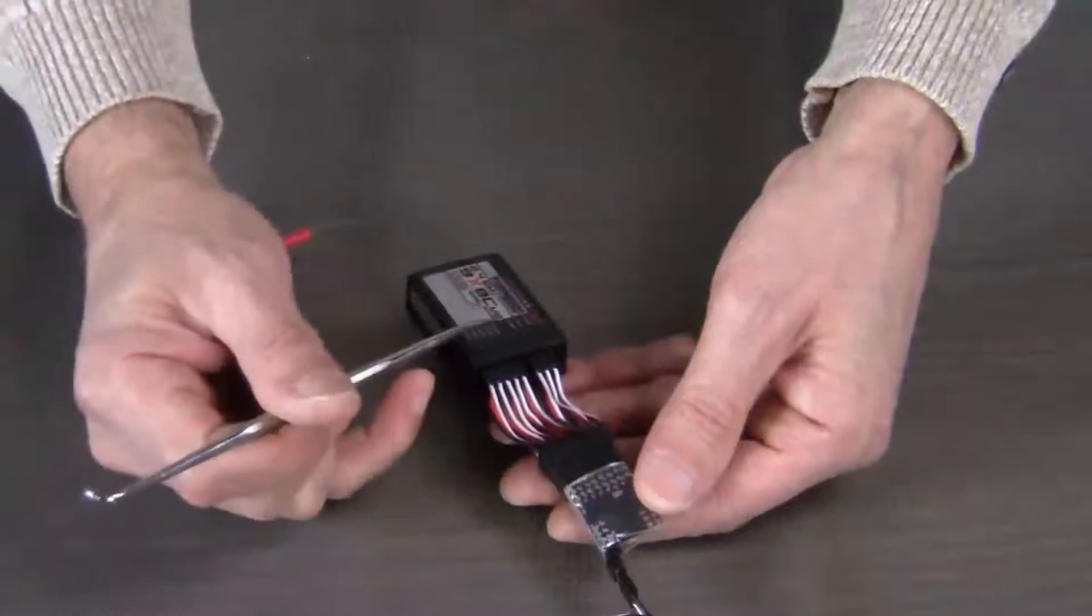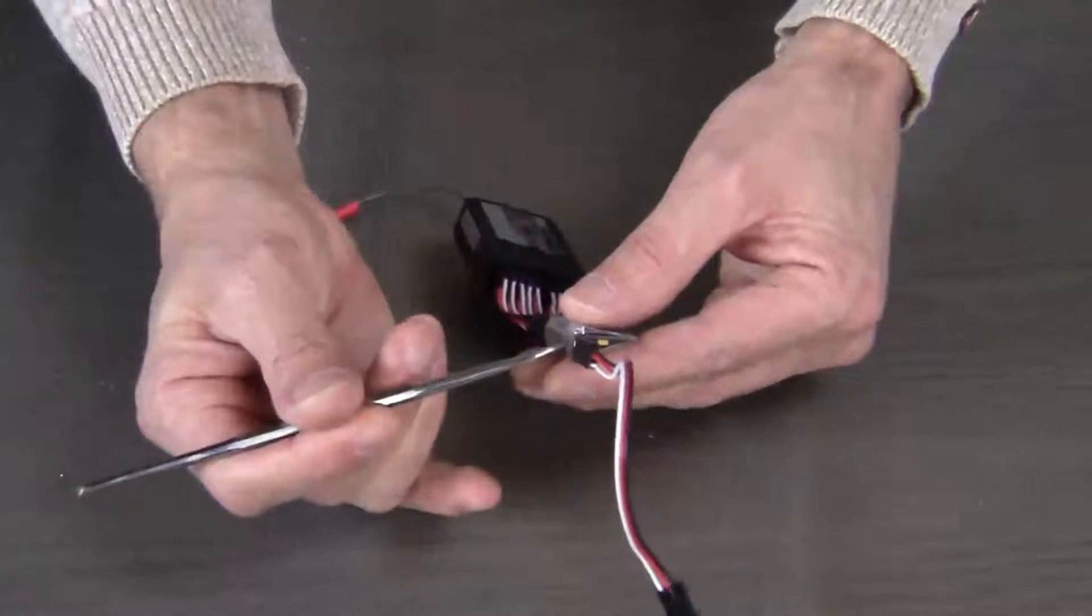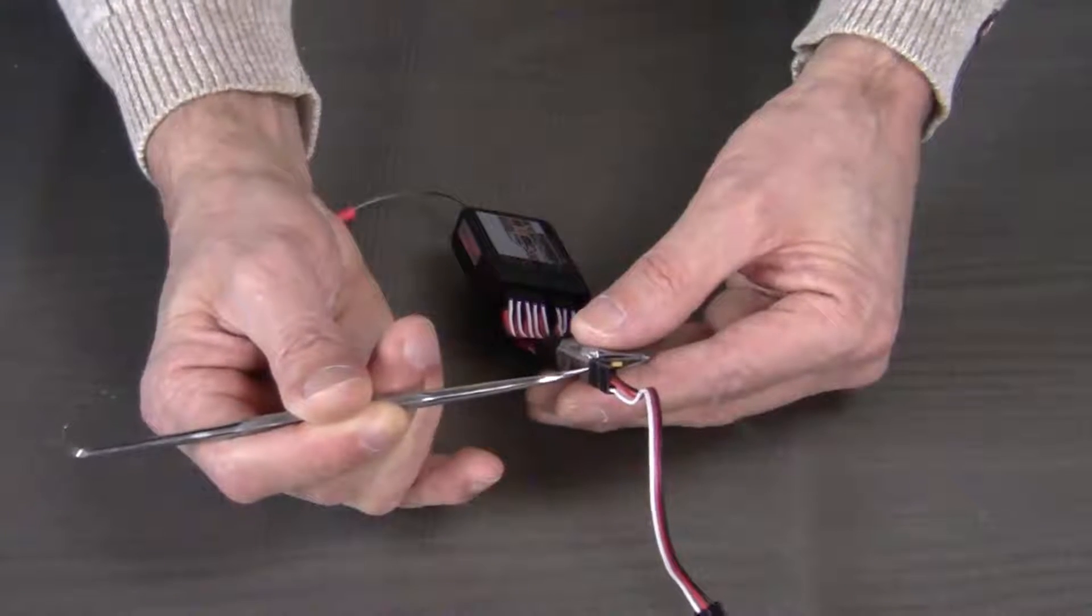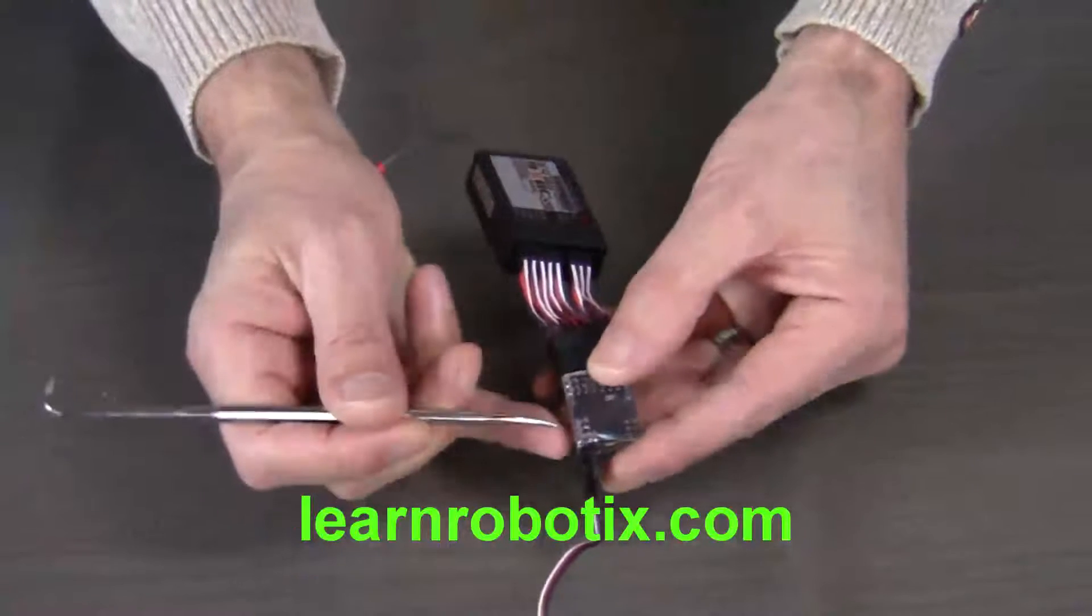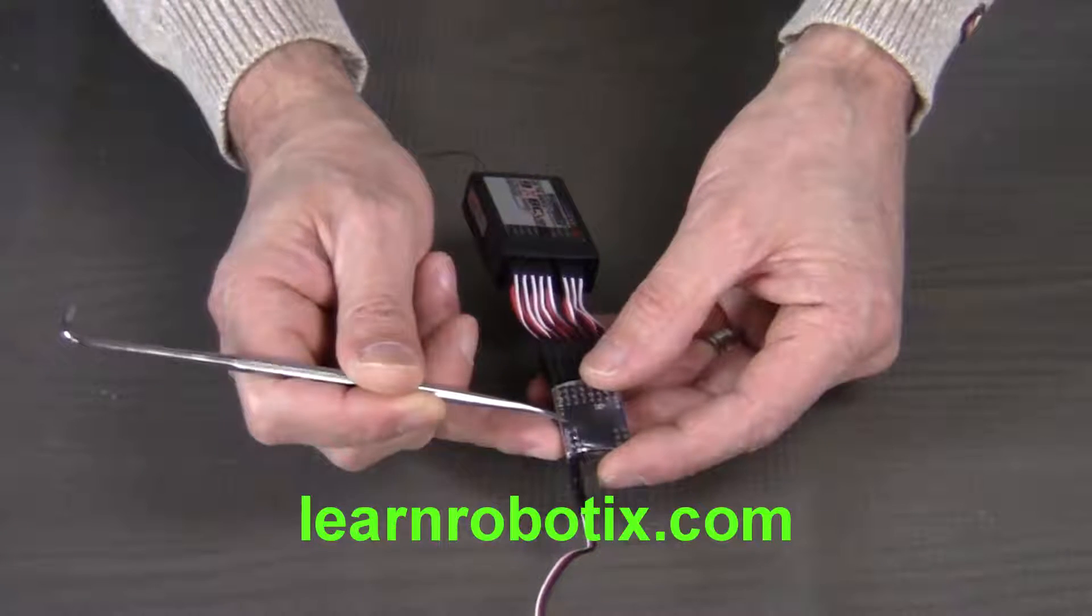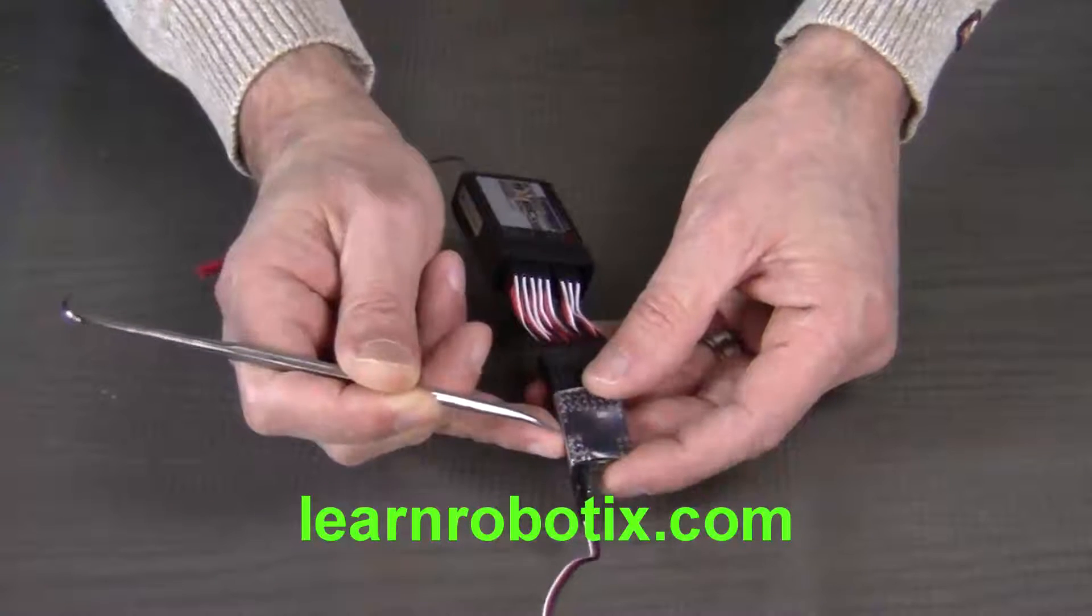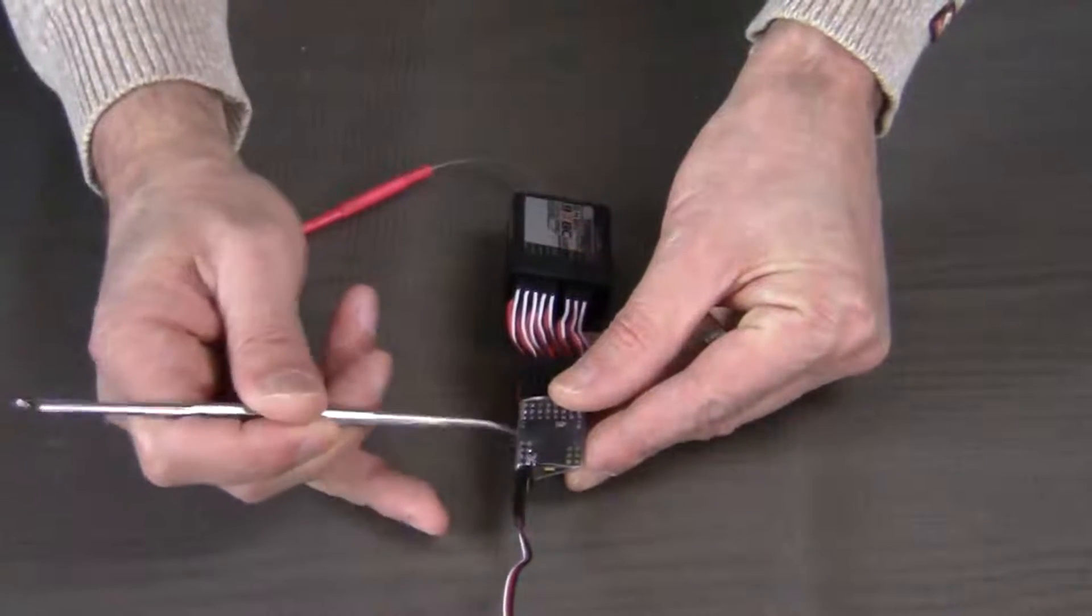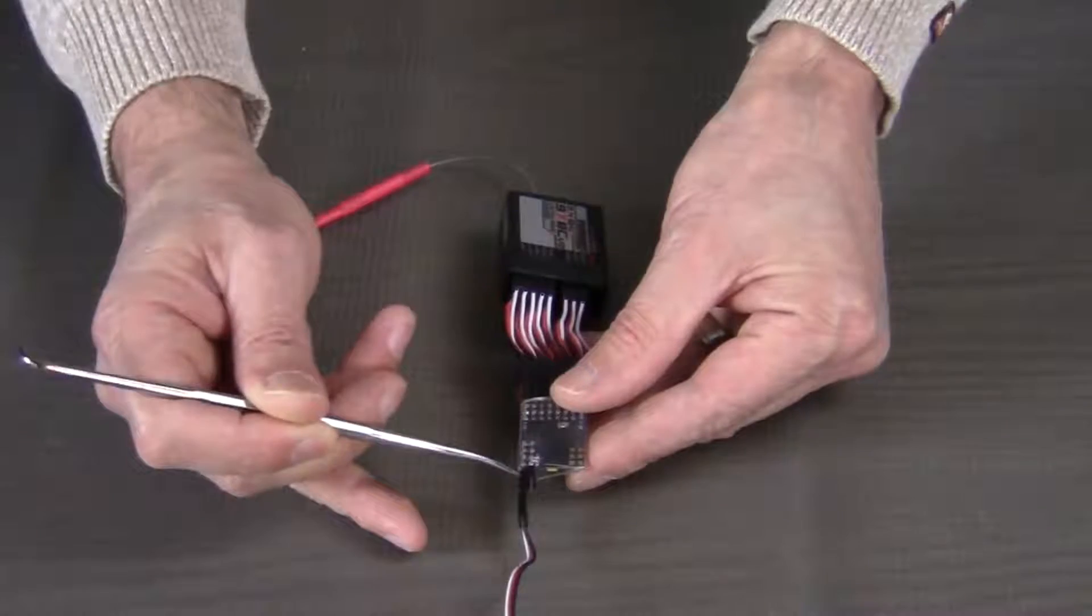Once you have the receiver and the encoder wired together, then we can connect the output signal. This is the set of pins that will go to the PixHawk flight controller. If you look very carefully on the encoder, there's one that says auxiliary, but this row of pins says PPM. So, looking at the encoder from this angle, you have to connect your servo wire to this set of pins.